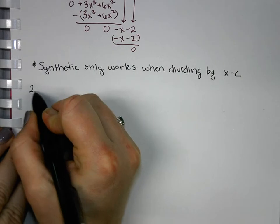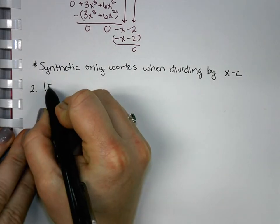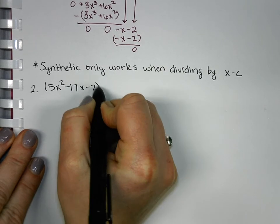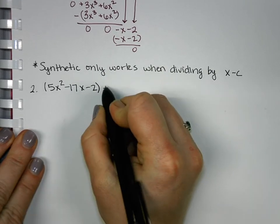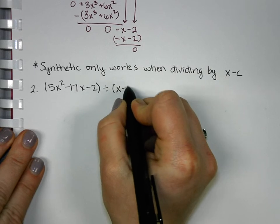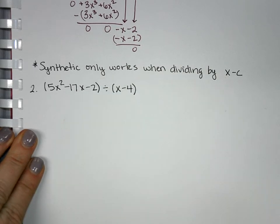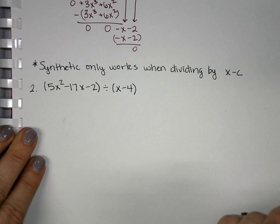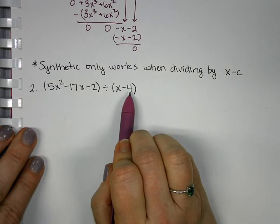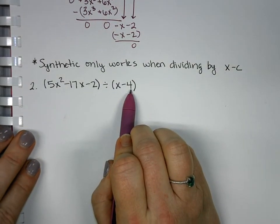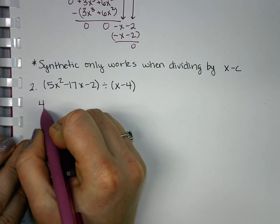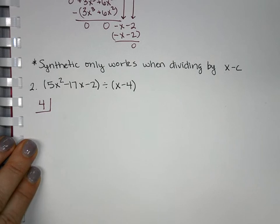So, our synthetic example, we're going to be dividing 5x squared minus 17x minus 2 divided by x minus 4. So, when we start this one, we're going to take the number here and we're going to go opposite of it. So, instead of negative 4, we're going to write positive 4. I'm going to put it in a little box off to the side.